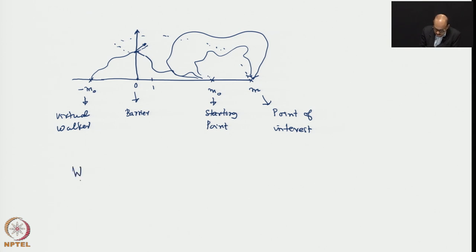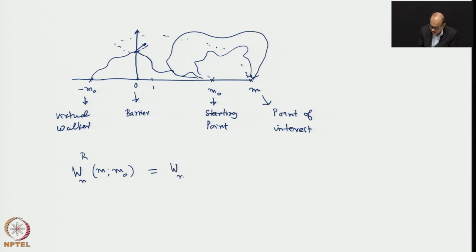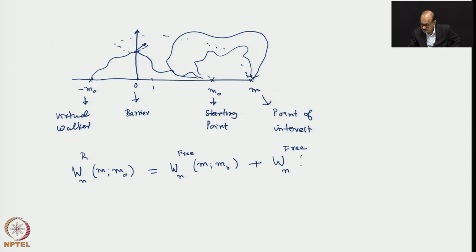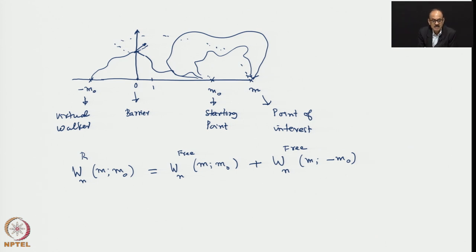In other words, the probability of finding the walker with the barrier is the sum of the probabilities of walkers both from m-naught and minus m-naught contributing to point m in the absence of the barrier. So the free random walks of the real walker and the virtual walker contributing to m is the same as the contribution of m-naught under the reflecting barrier. We write: w_n under reflection, of a walker starting from m-naught with reflection at m equal to 0, equals w_n free (m, m-naught) plus w_n free (m, minus m-naught).